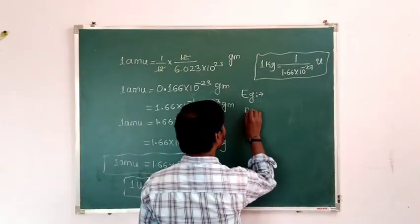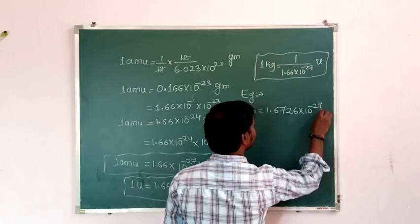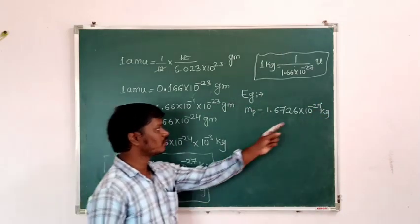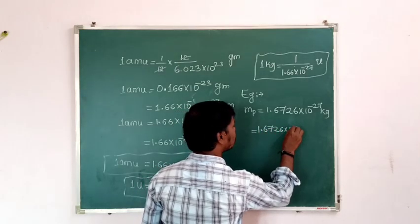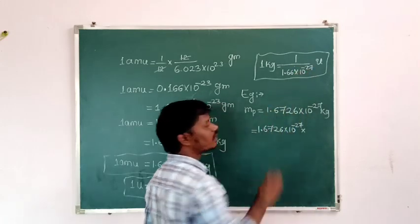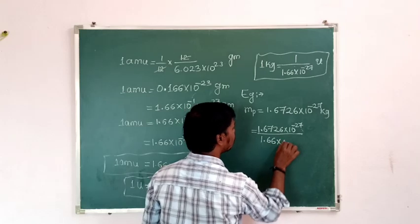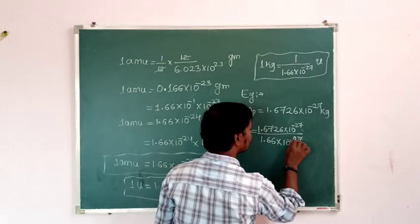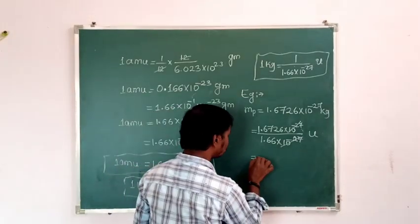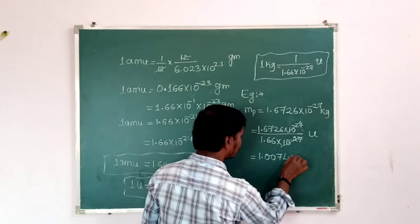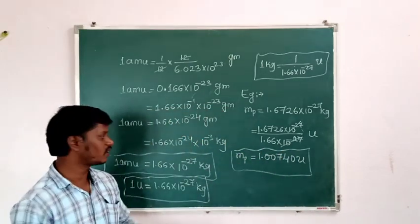The mass of the proton in terms of kg is 1.6726 × 10⁻²⁷ kg. To convert to atomic mass unit: 1.6726 × 10⁻²⁷ × (1 / 1.66 × 10⁻²⁷). The 10⁻²⁷ terms cancel and the answer is approximately 1.00740 atomic mass units. So the mass of the proton is 1.00740 amu.